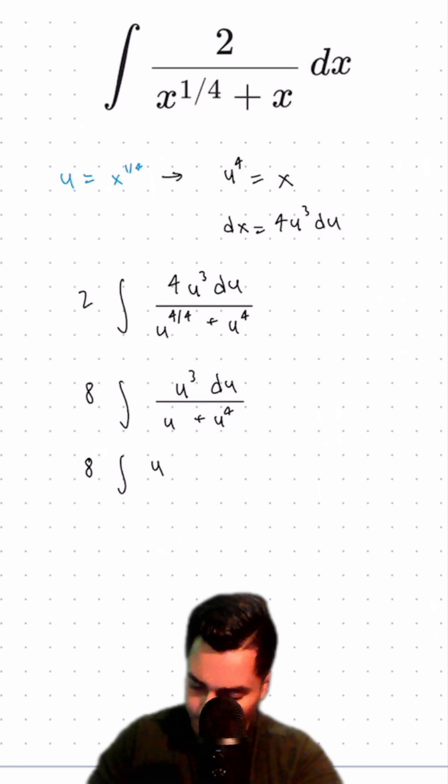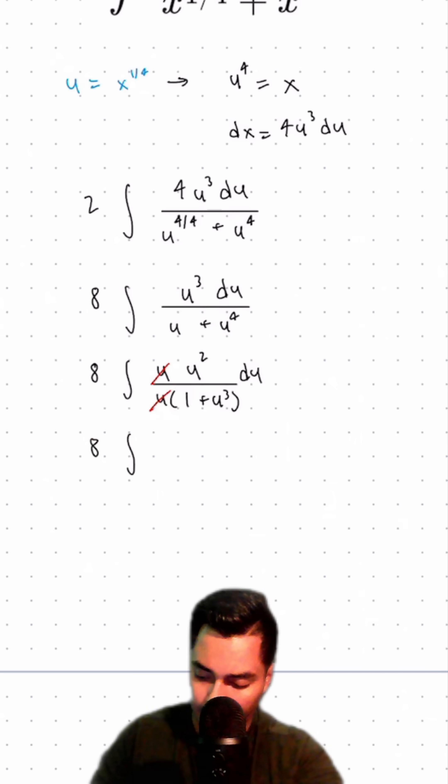I'm going to pull out one of those u's to be u times u squared over u times 1 plus u to the 3rd power du. Cancel out two of those u's, and we're left with 8 times the integral of u squared over 1 plus u to the 3rd power du.